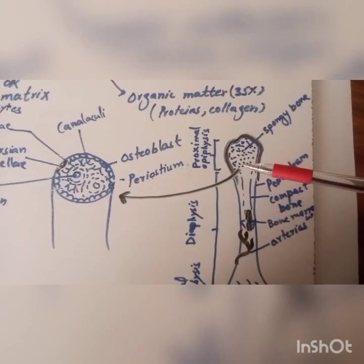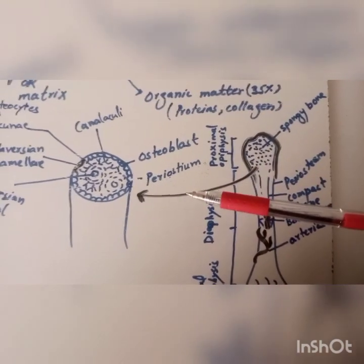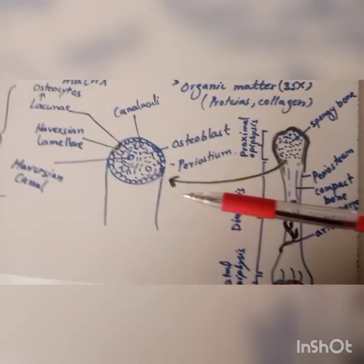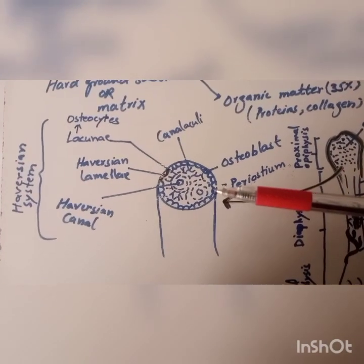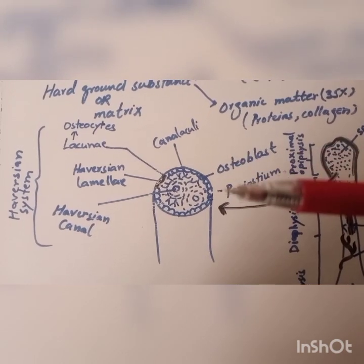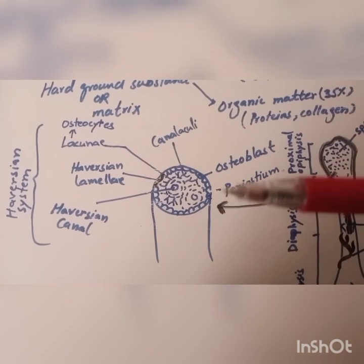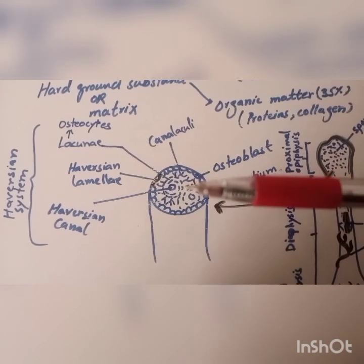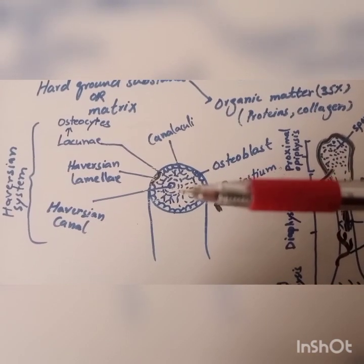If we look at the internal structure of the bone, the internal structure consists of the Haversian system. In the Haversian system, there is a central canal that is called Haversian canal.